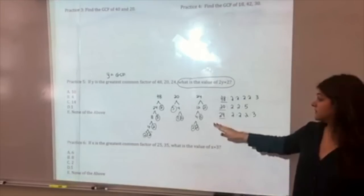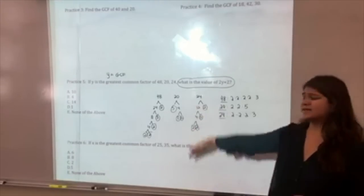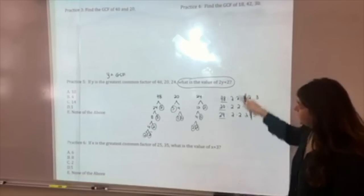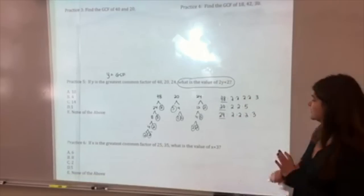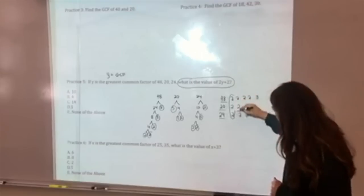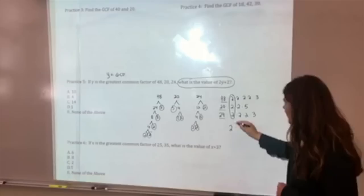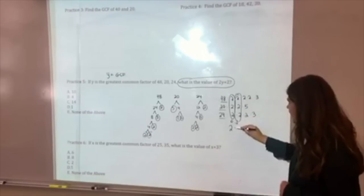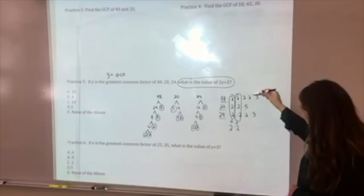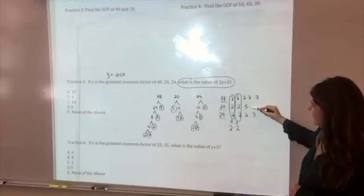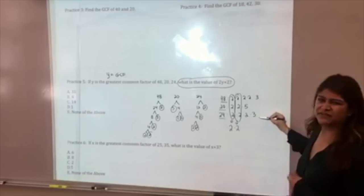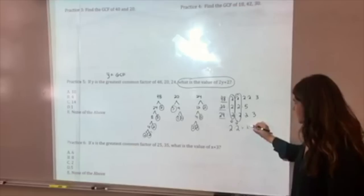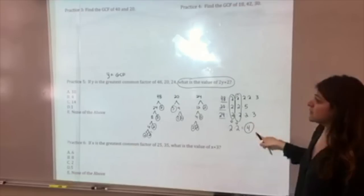So your work should look very similar to mine. Notice that I'm not skipping any steps and neither should you. Next, we're going to look at which prime factors they share. So I notice they all share a 2, so I'm going to pull that out. They share another 2 here, so I'm going to pull that out. This one only has a 5 and there are no shared 5s in the other two numbers. So we are actually done. So our GCF is going to be 4.